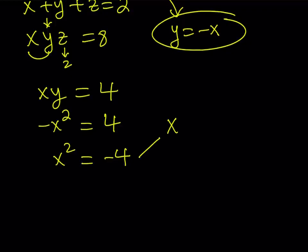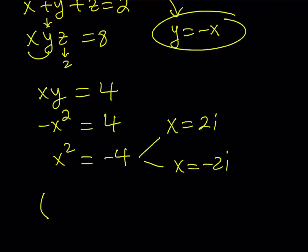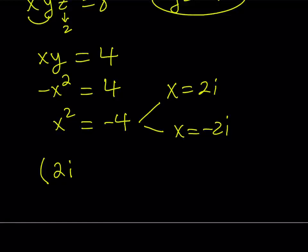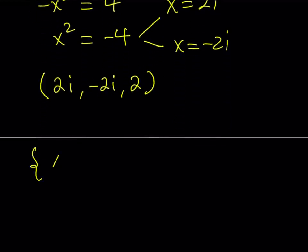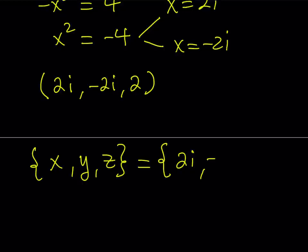From here, we can write x as either 2i or negative 2i. These are the x values, but since y equals negative x, they also serve as y values — they just permute. One ordered triple that satisfies this is 2i, negative 2i, 2, since z equals 2. There will be 3 factorial, which is 6, permutations. Rather than listing ordered pairs, let's write the result as a set, so we don't have to worry about permutations. As a set, the solution is the set containing 2i, negative 2i, and 2, meaning all these values are possible for x, y, and z.